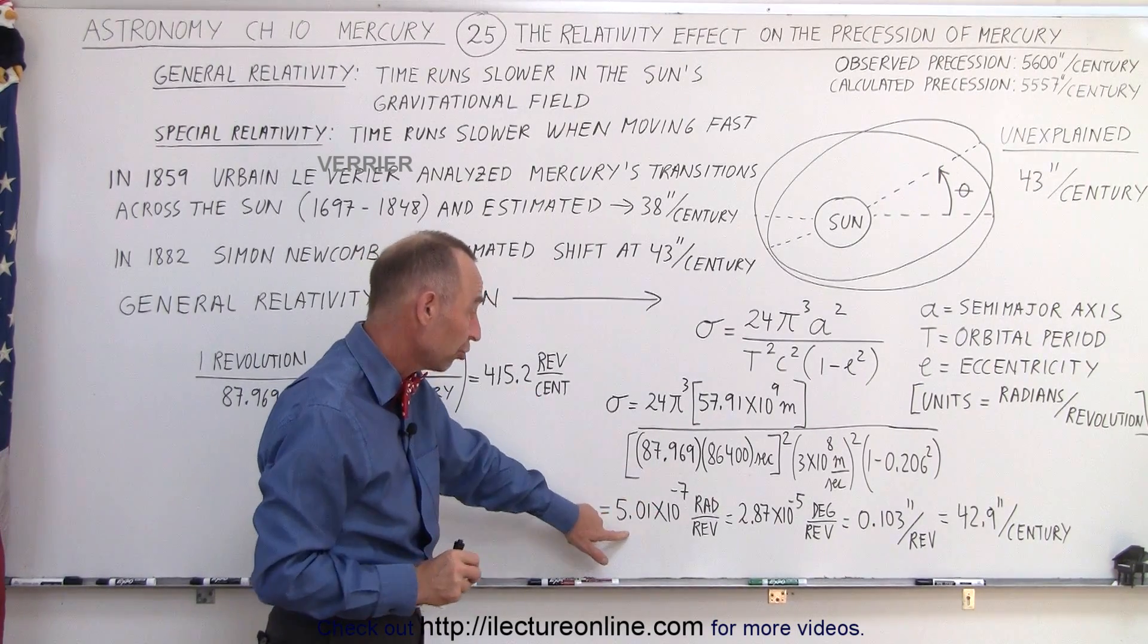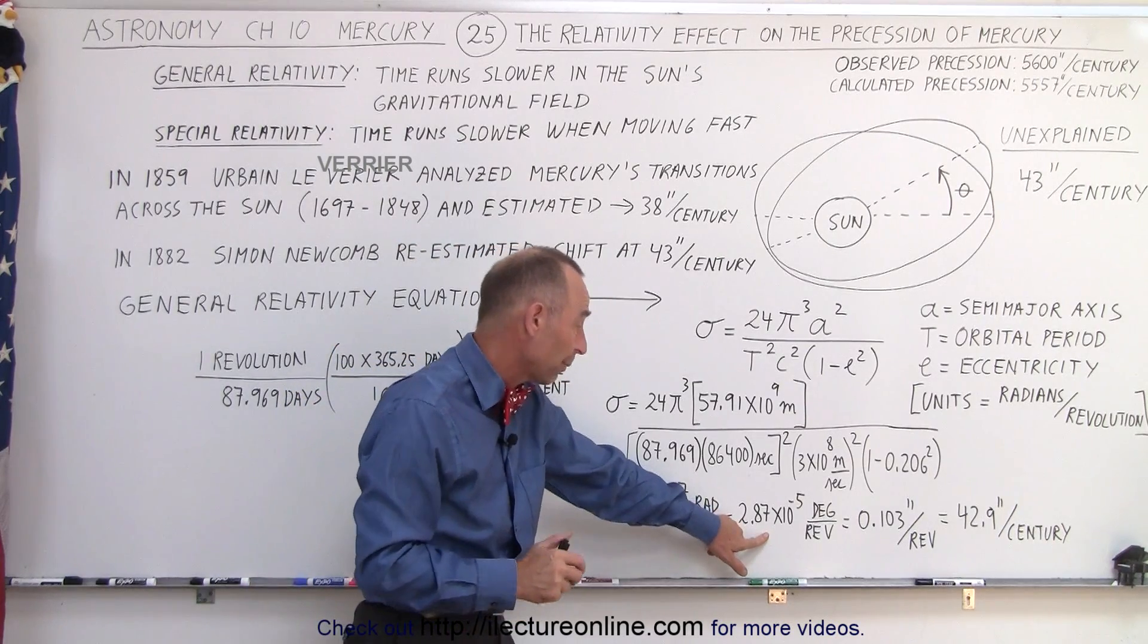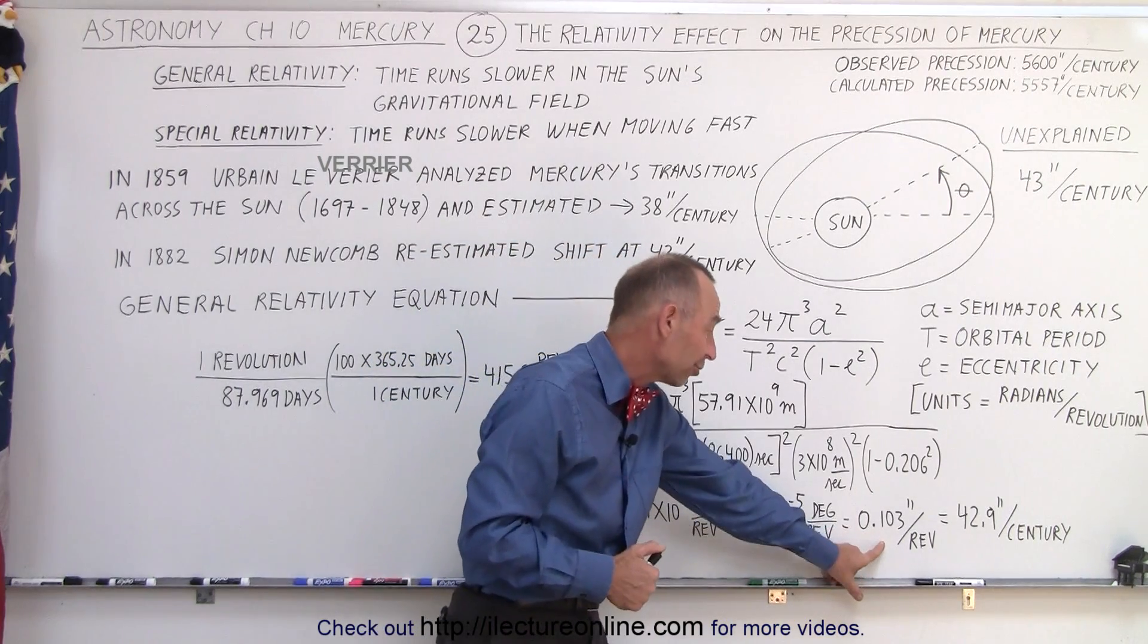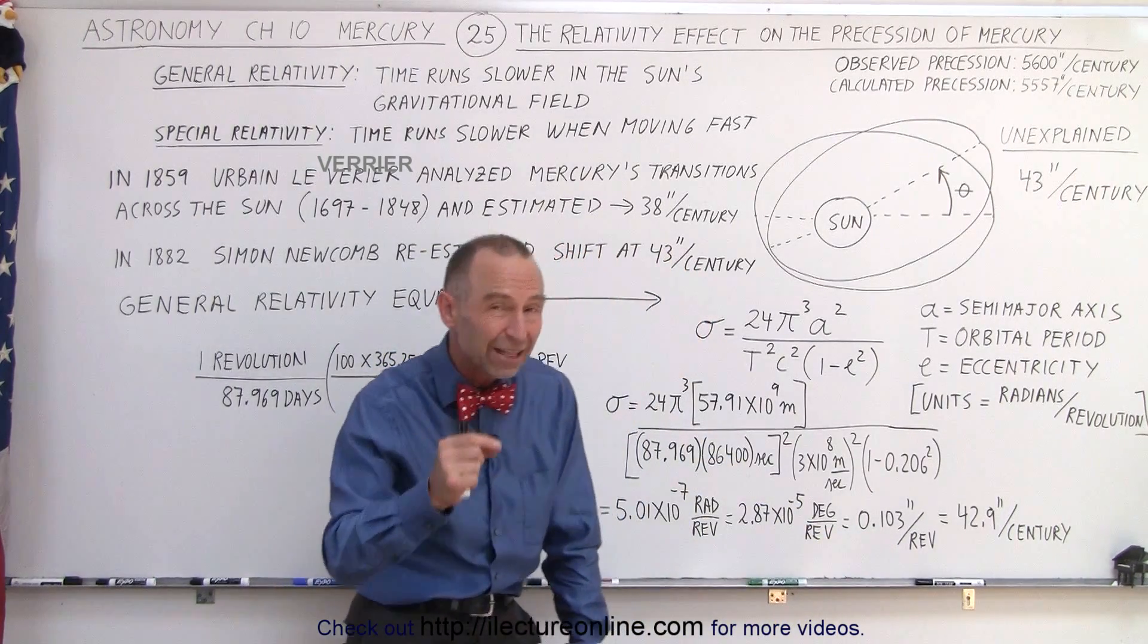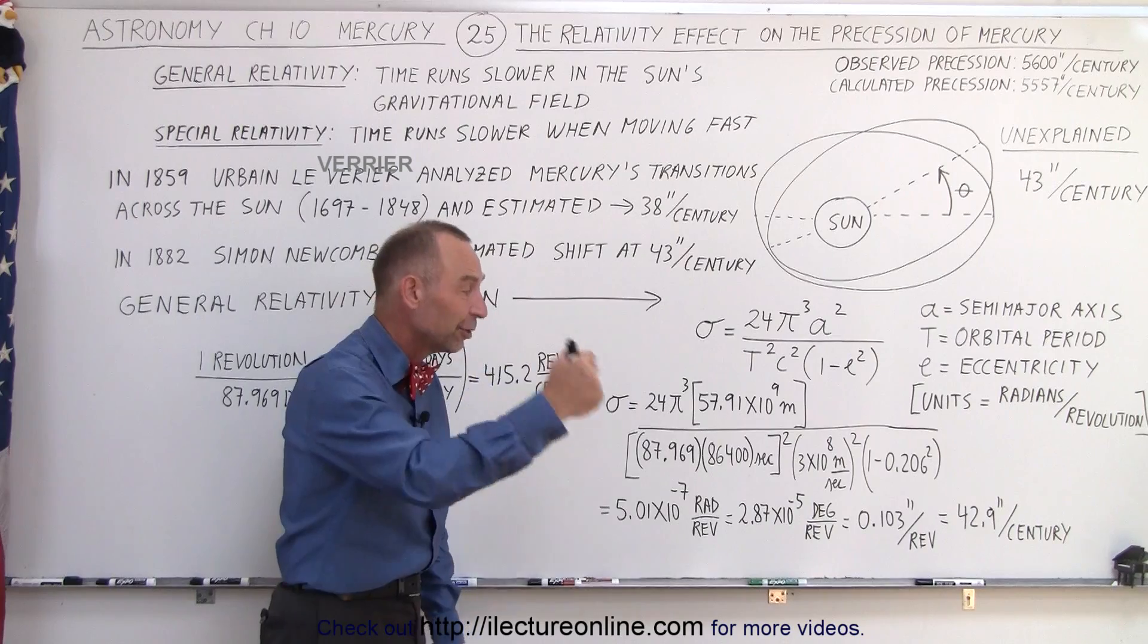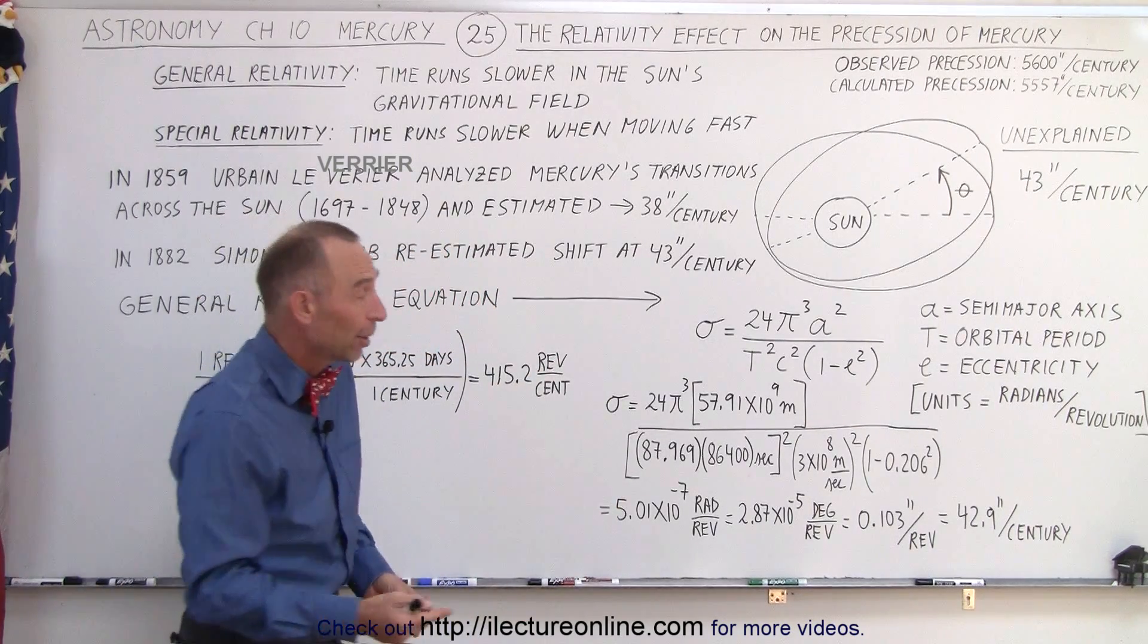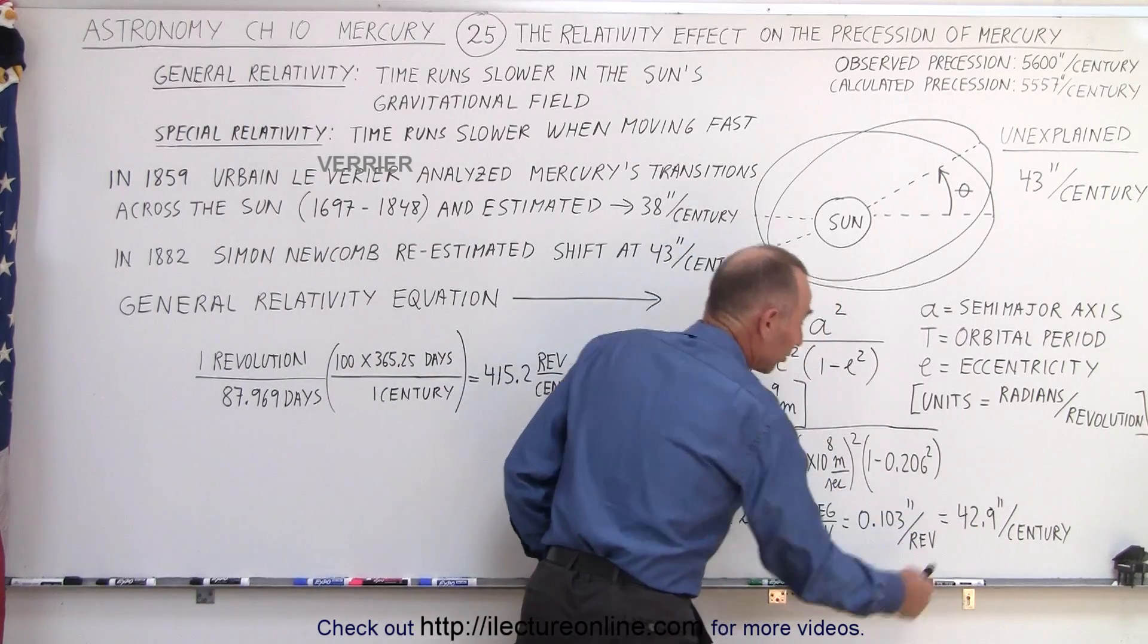It's a very small shift. In degrees per revolution it's about 2.87 times 10 to the minus 5, and then in arc seconds per revolution it's about one-tenth of an arc second for every orbit of Mercury around the Sun. Now how does that add up to almost 43 arc seconds per century?